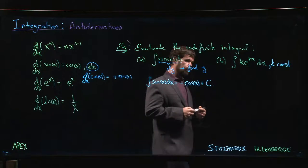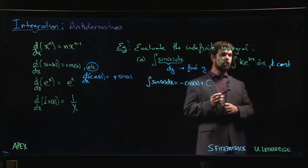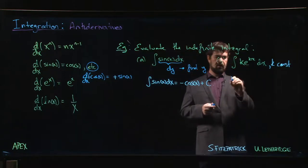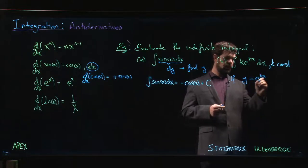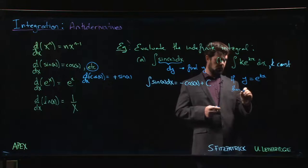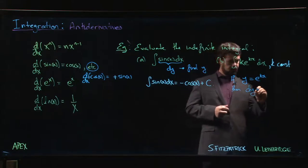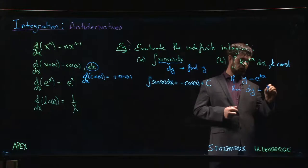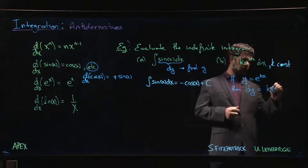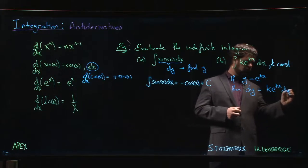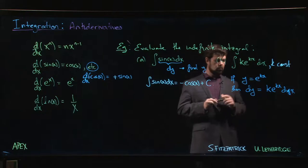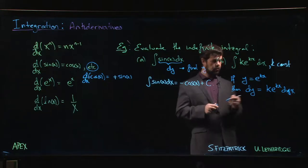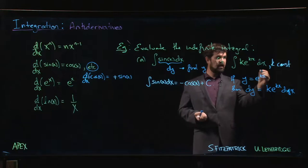If y is e^(kx), then dy would be k e^(kx) times dx. So we have our antiderivative. The answer here is e^(kx), possibly plus some constant.